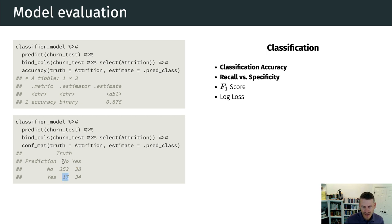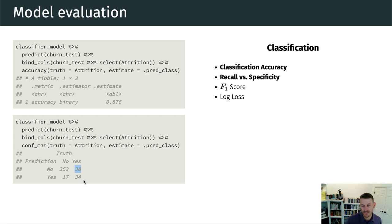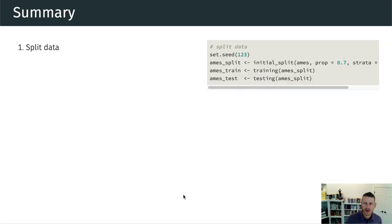The off-diagonal values show our errors. The model predicts an employee is going to leave when in fact they did not — 17 times in our test set. In the upper right corner, our model predicts an employee is not going to leave when in fact they did — 38 times. So when our model mispredicts, it typically mispredicts that an employee is not going to leave when in fact they are.